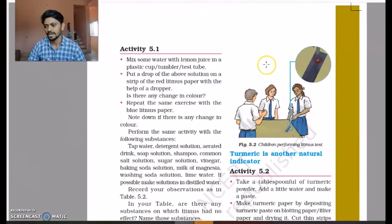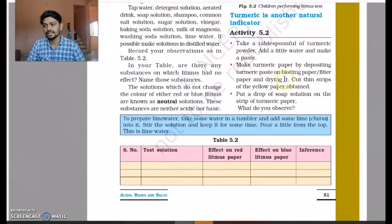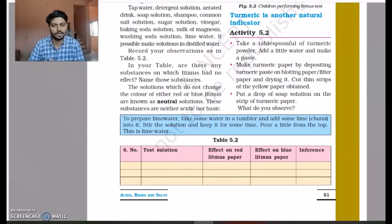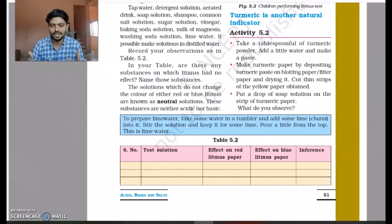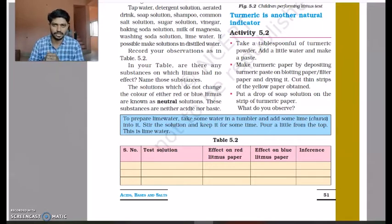Another natural indicator is turmeric — haldi — which we use every day. Take some turmeric and add water to make a solution. The solution is yellowish in color. If you add acid to it — for example, hydrochloric acid — there will be no change in color. So turmeric does not change its color when acid is added.